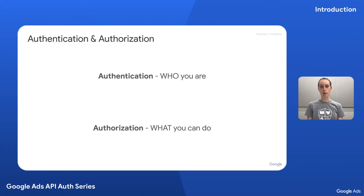For example, when you log into your Google Ads account, you provide your username and password so that Google can verify you are the person logging in. This is the authentication process. However, your role in the account — such as admin, standard, or read-only — determines what you can do and see within that account. This is the authorization piece.